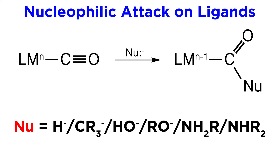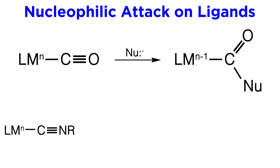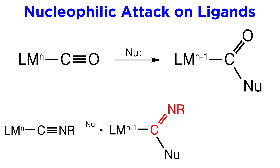This nucleophile is likely to have been a hydride, carbanion, hydroxide, alkoxide, or amine. We can see the same thing occurring with other types of ligands, such as this isonitrile. The nucleophile attacks just as it did the carbonyl, leaving us with this amine, and the lower oxidation state for the metal.